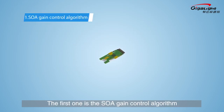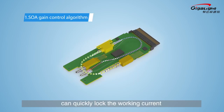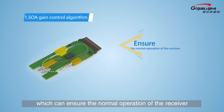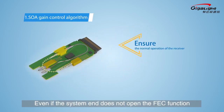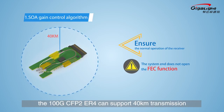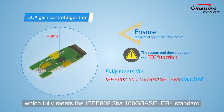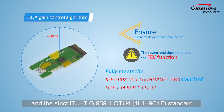The first is the SOA gain control algorithm. When receiving optical power changes, the closed-loop adaptive algorithm can quickly lock the working current and adjust the amplification performance of the SOA, ensuring normal receiver operation. Even if the system does not enable the FEC function, the 100G CFP2 ER4 can support 40-kilometer transmission, fully meeting the IEEE 802.3ba 100GBASE-ER4 standard and the ITU-T G.959.1 OTU4 standard.